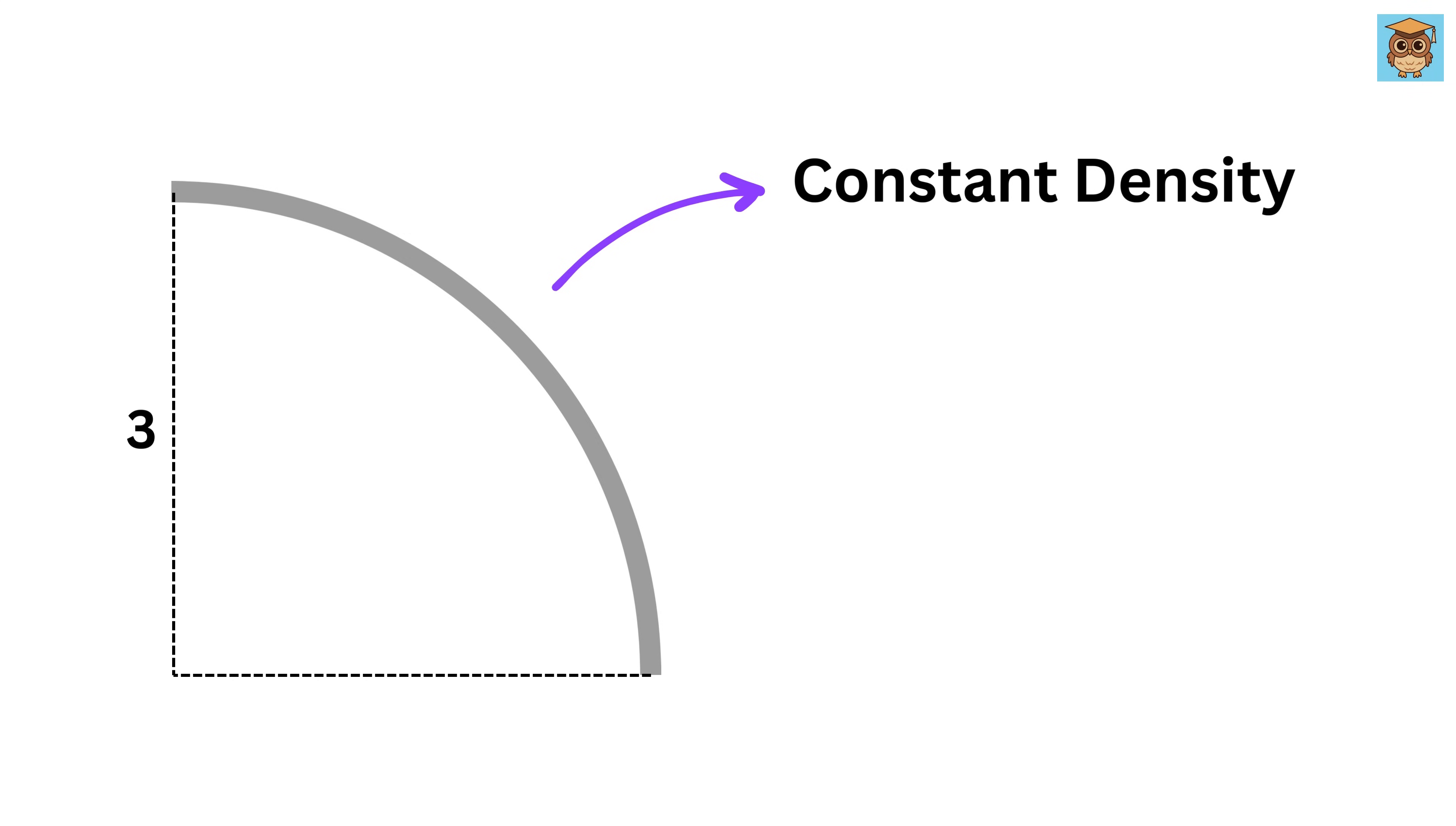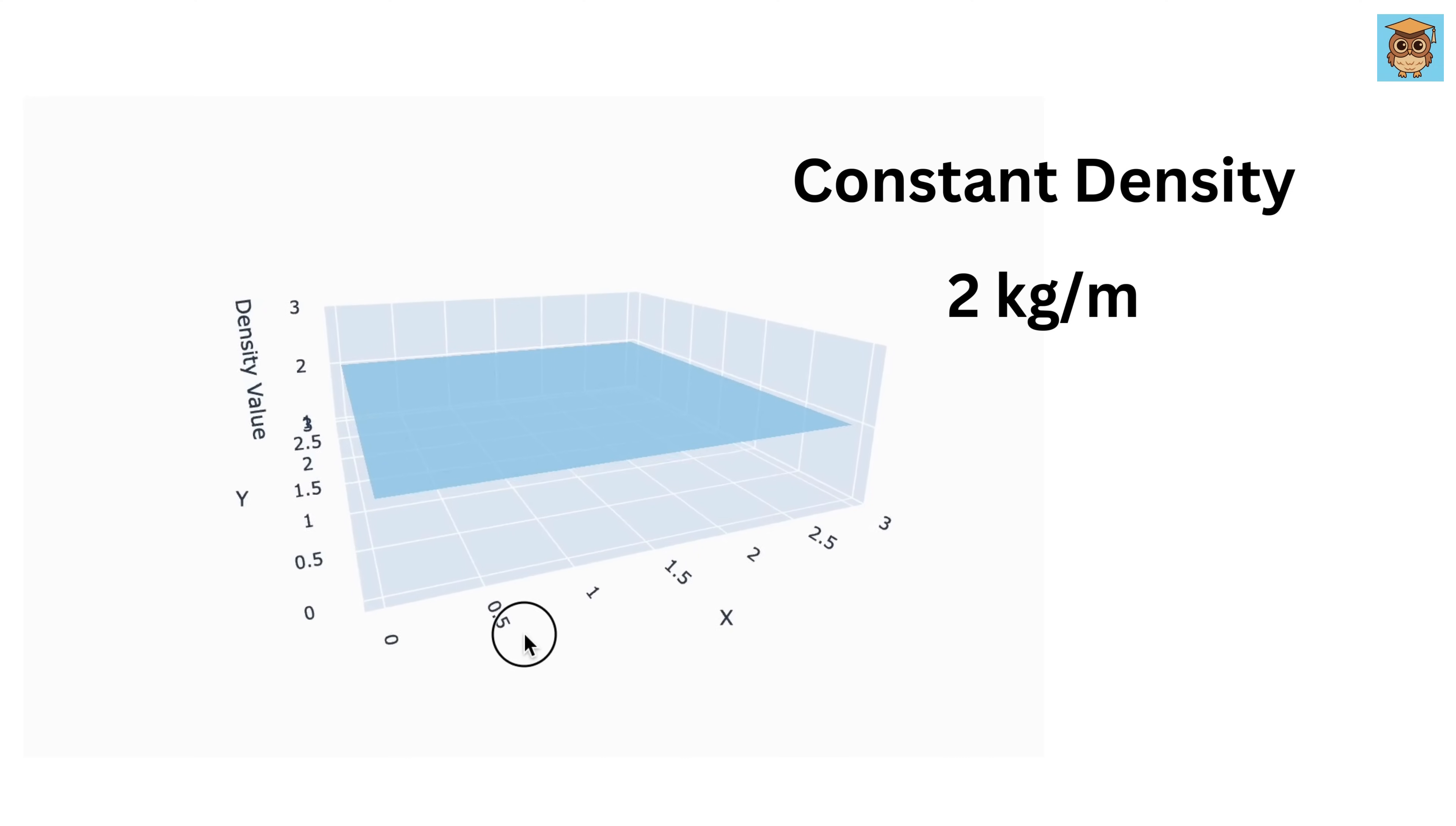Suppose this wire has a constant density everywhere, meaning every small piece of the wire has the same amount of mass per unit length, and assume this density is 2 kilograms per meter of the wire. So if I plot a density surface in 3D, where these are the x and y-axis, and the z-axis represents the value of the density, like you can see, the value of z is 2 everywhere, which means the density is constant for all x and y values.